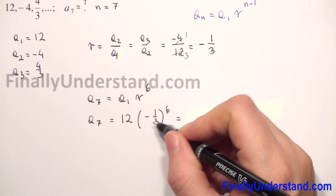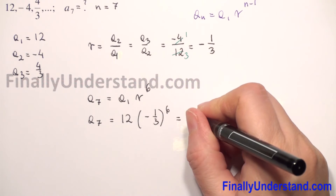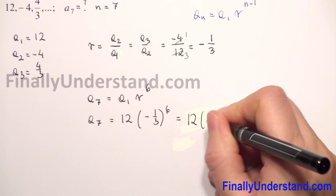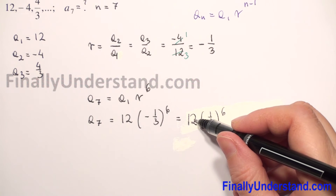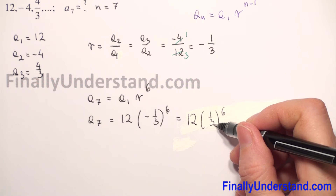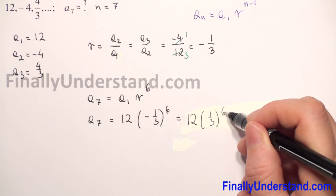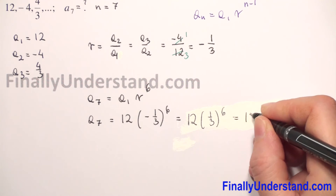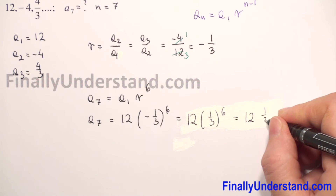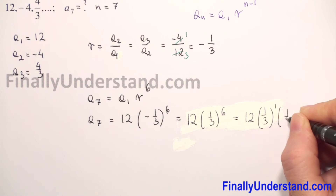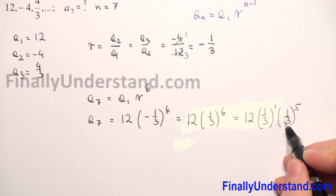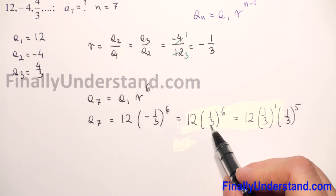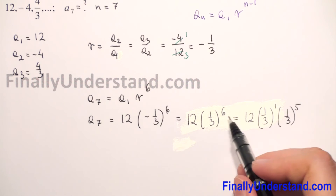Since the power is even, the negative sign will cancel out, so we have 12 times one third to the power 6. We rewrite one third to the 6th power as one third to the first power times one third to the fifth power. Since we are multiplying the same base, we copy the base and add the exponents: 1 plus 5 equals 6.